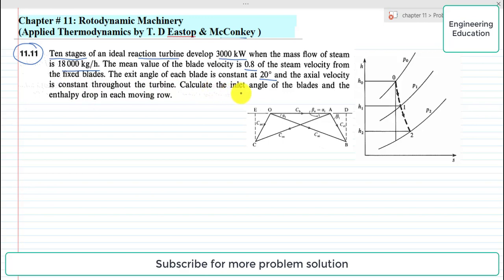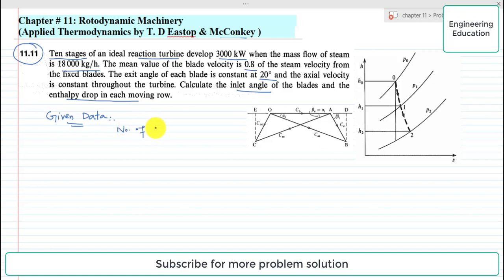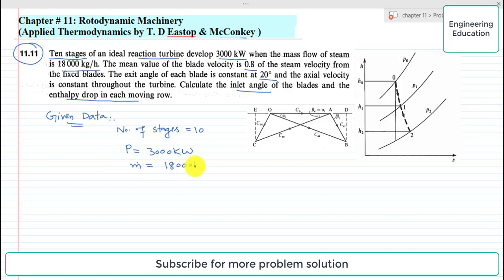The axial velocity is constant throughout the turbine. Calculate the inlet angle of the blades and the enthalpy drop in each moving row. The given information: number of stages is 10, power developed is 3000 kilowatt, and mass flow rate is 18,000 kilogram per hour.